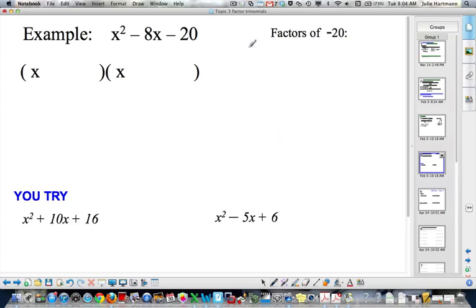Here's another one. Factors of negative 20. Now, here's one with negatives. So, to get negative 20, you could have 1 times negative 20, or negative 1 times 20. You could have 2 times negative 10, or negative 2 times 10. 4 times negative 5, or negative 4 times positive 5. Those are all the factors to get negative 20. And now you figure out what adds to give us negative 8.